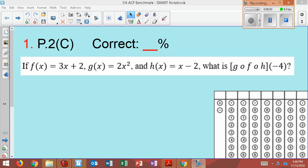If f of x equals 3x plus 2, g of x equals 2x squared, and h of x equals x minus 2, what is g of f of h of negative 4?